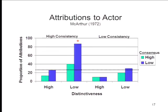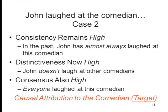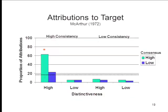Case two: John laughed at the comedian. Consistency is high — John has almost always laughed at this comedian. Now distinctiveness is also high — John doesn't laugh at other comedians. And consensus is high — everyone laughed at this comedian. Under those circumstances, the attribution is to the comedian. He's a particularly funny guy who makes John laugh and makes everybody else laugh too. MacArthur found that high consistency, high distinctiveness, and high consensus drove attributions toward the target, in a way that other combinations did not.